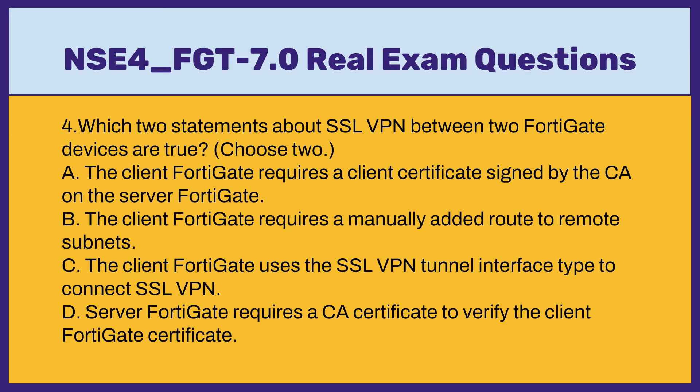Question 4: Which two statements about SSL VPN between two FortiGate devices are true? Choose two. A. The client FortiGate requires a client certificate signed by the CA on the server FortiGate. B. The client FortiGate requires a manually added route to remote subnets. C. The client FortiGate uses the SSL VPN tunnel interface type to connect SSL VPN. D. Server FortiGate requires a CA certificate to verify the client FortiGate certificate.